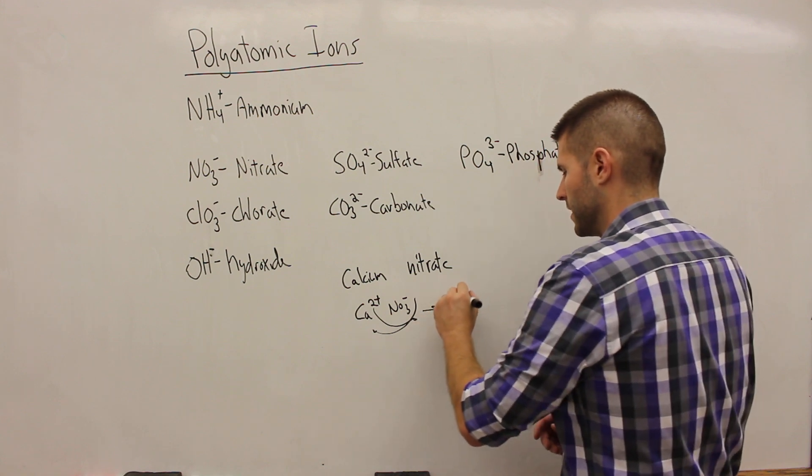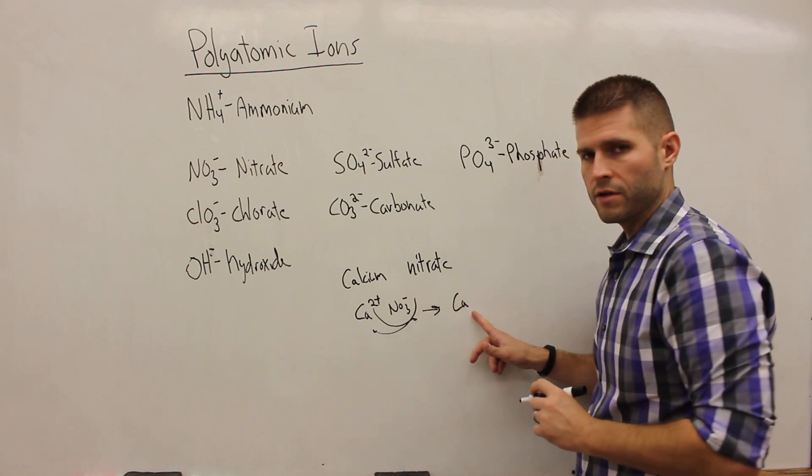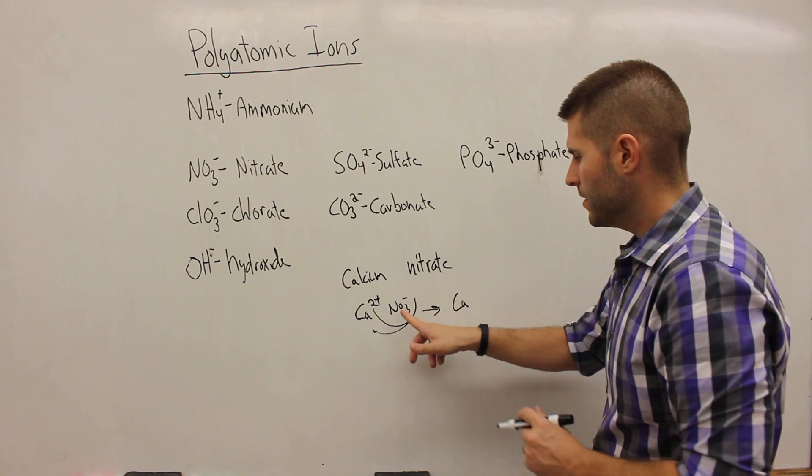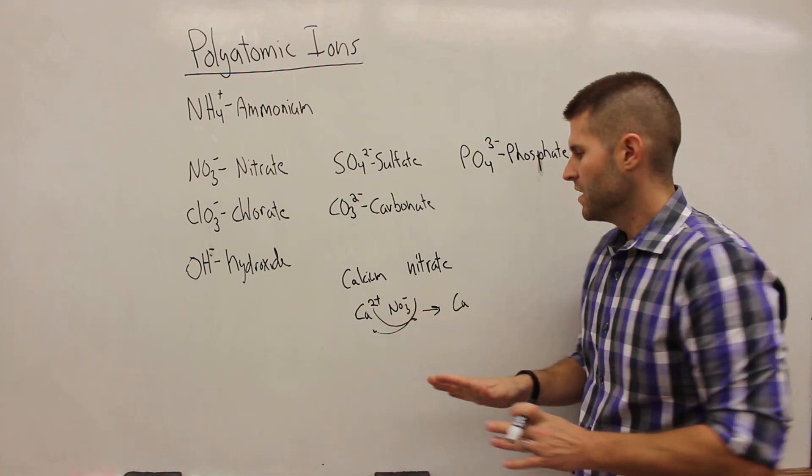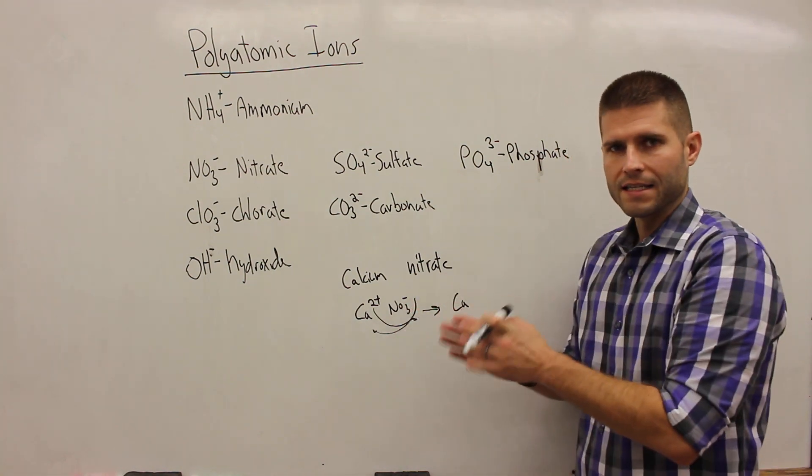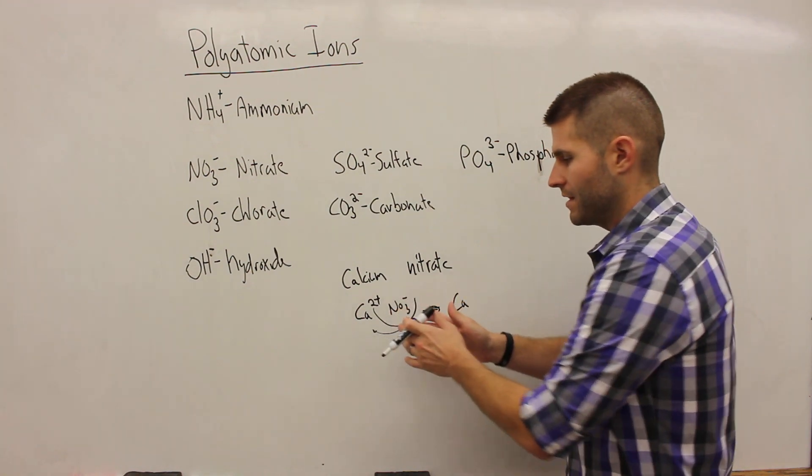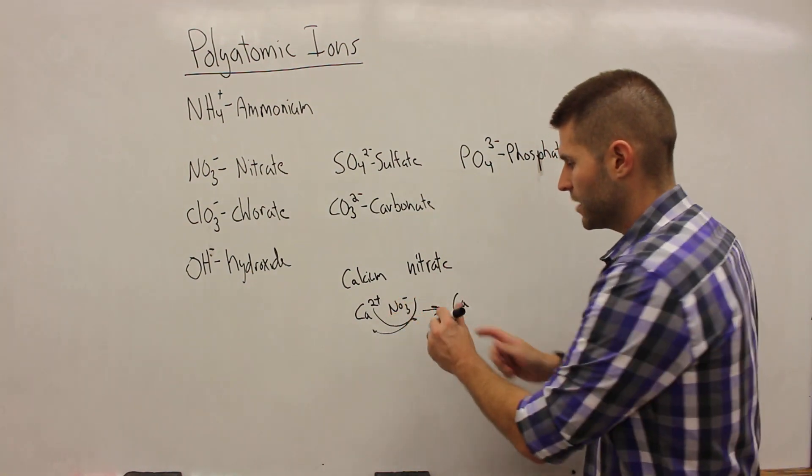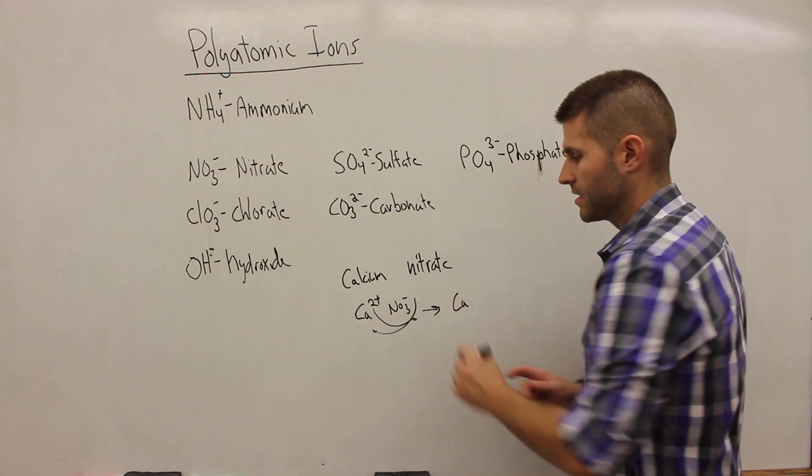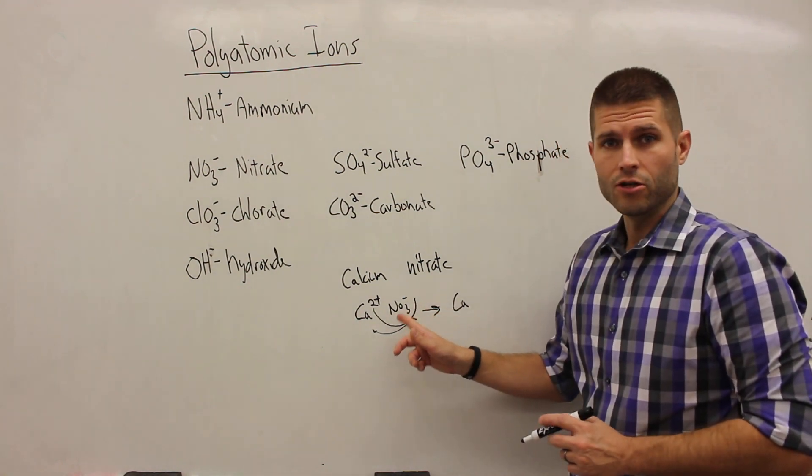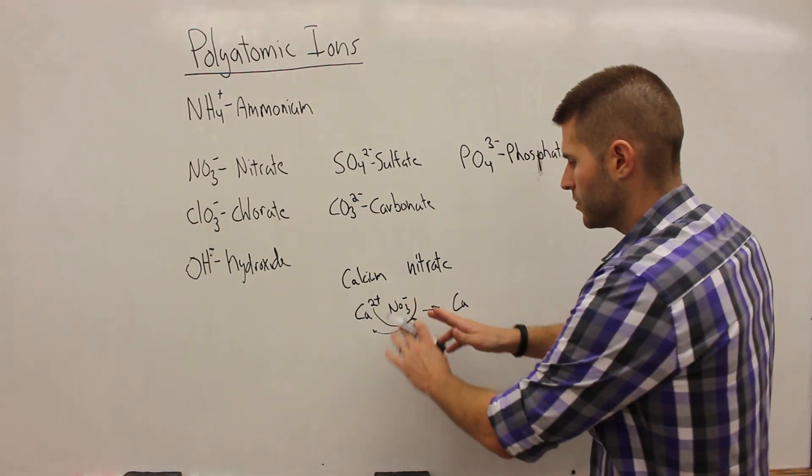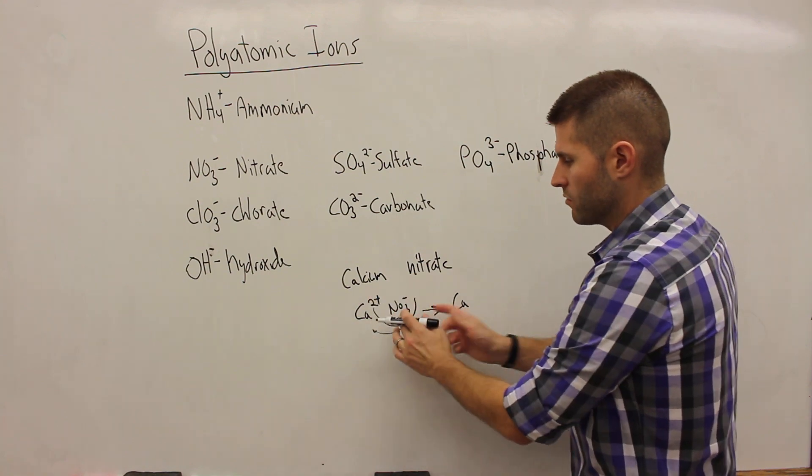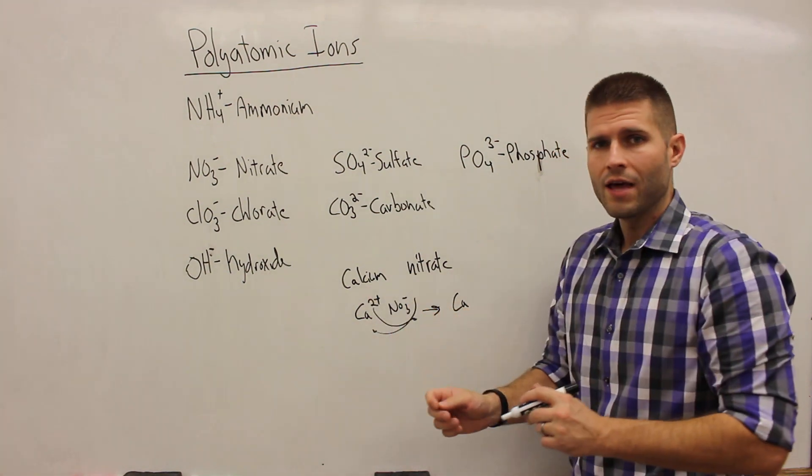And what we're going to see is we're going to get Ca with a 1, but remember we do not write 1s. And then the nitrate. The nitrate is special. We want to make sure that we understand as a scientist that the nitrate, that there are 2 full nitrates. So we can't just simply put the 2 right next to the 3 because that would look like 32 oxygens.